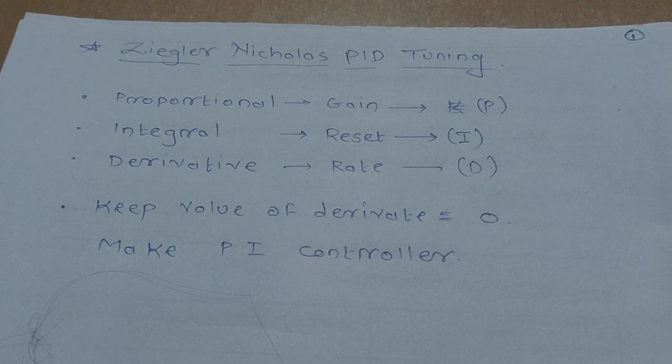There are three parameters required to tune the PID controller: proportional, which is also known as gain; second is integral, which is also known as reset; and third is derivative, which is rate.